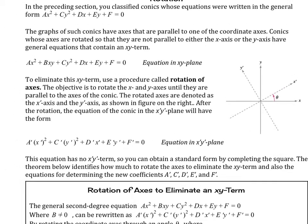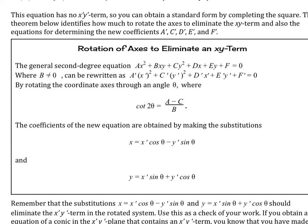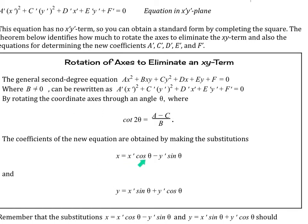The theorem below identifies how much to rotate the axes to eliminate the xy term, and also the equations for determining the new coefficients a′, c′, d′, e′, and f′. The general second-degree equation ax² + bxy + cy² + dx + ey + f = 0, where b ≠ 0, can be rewritten in the rotated form by rotating through angle theta, where cot(2θ) = (a − c)/b. The coefficients of the new equation are obtained by substituting x = x′cosθ − y′sinθ and y = x′sinθ + y′cosθ.